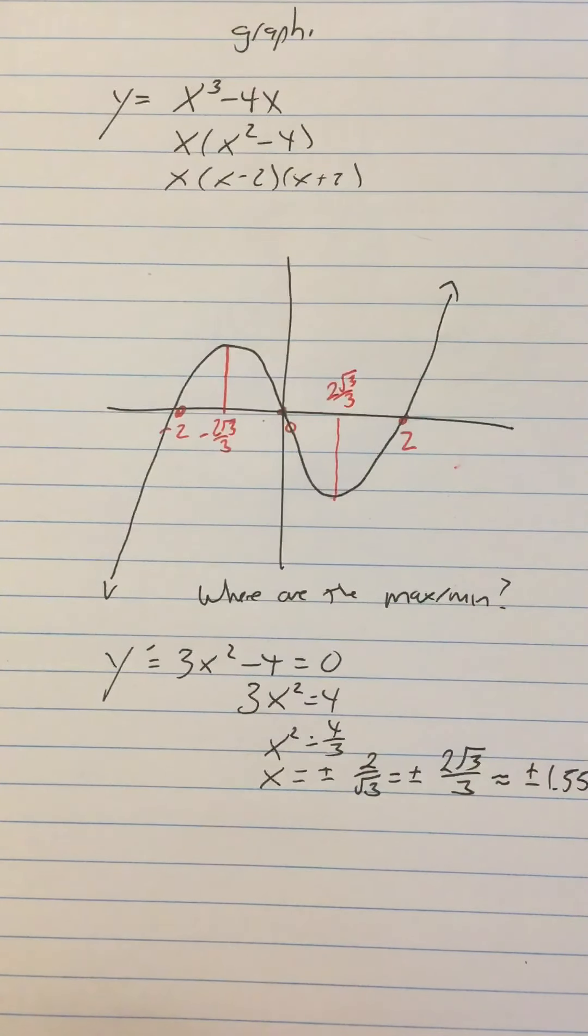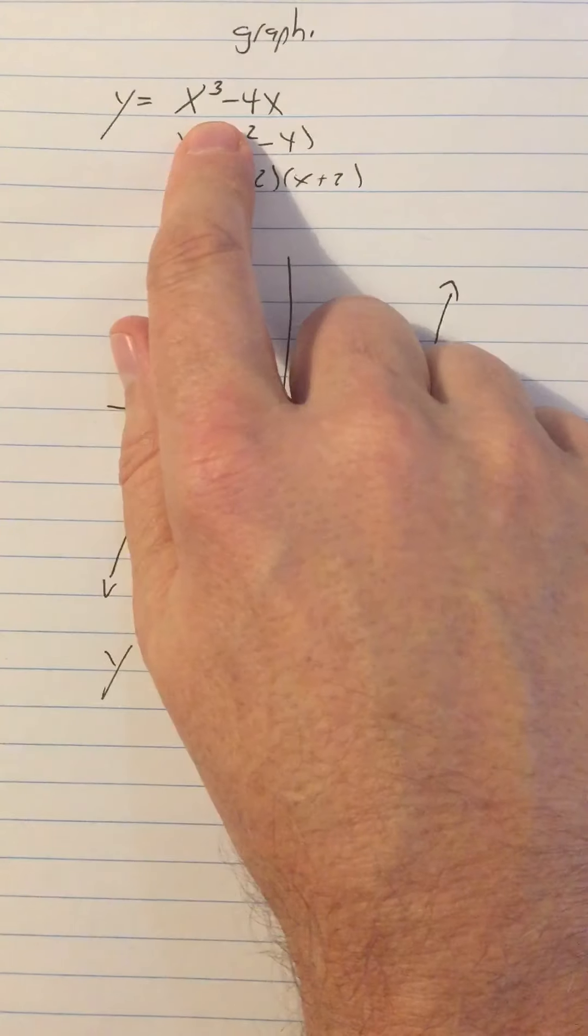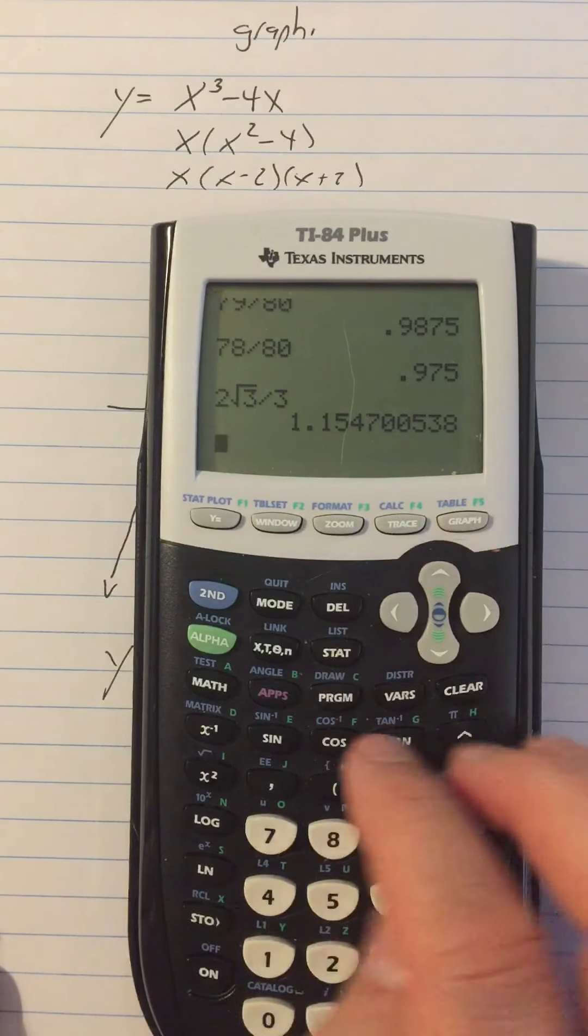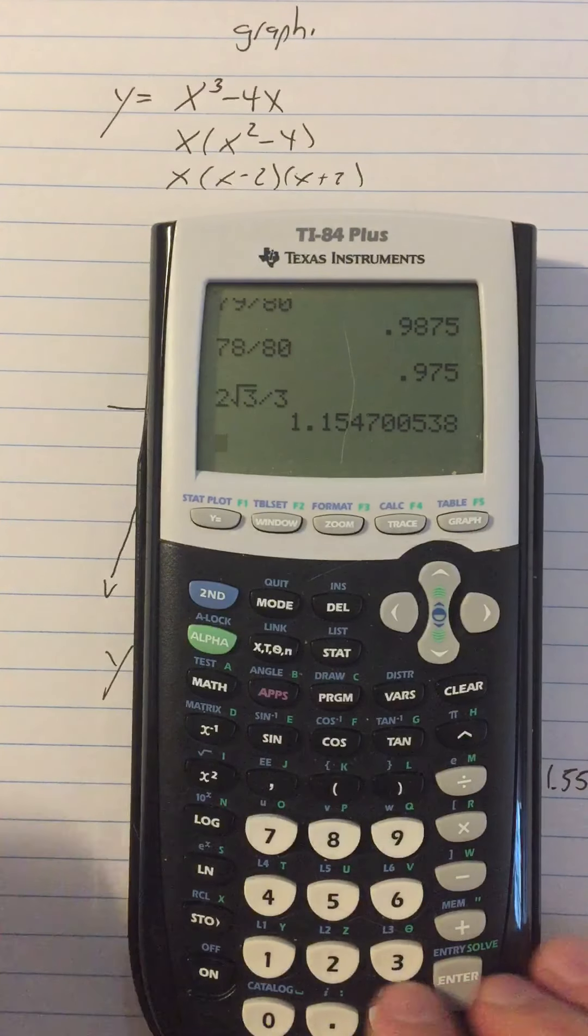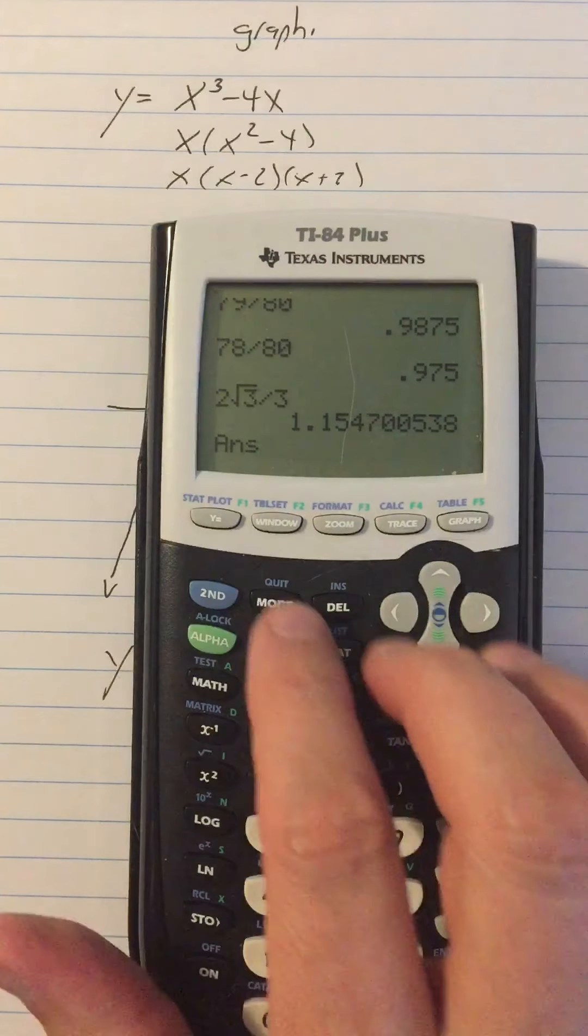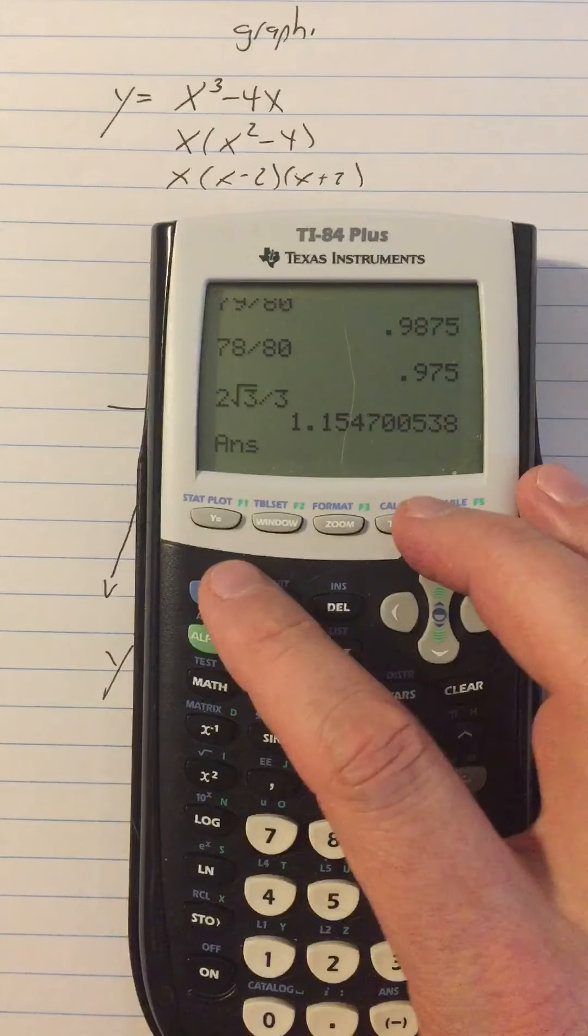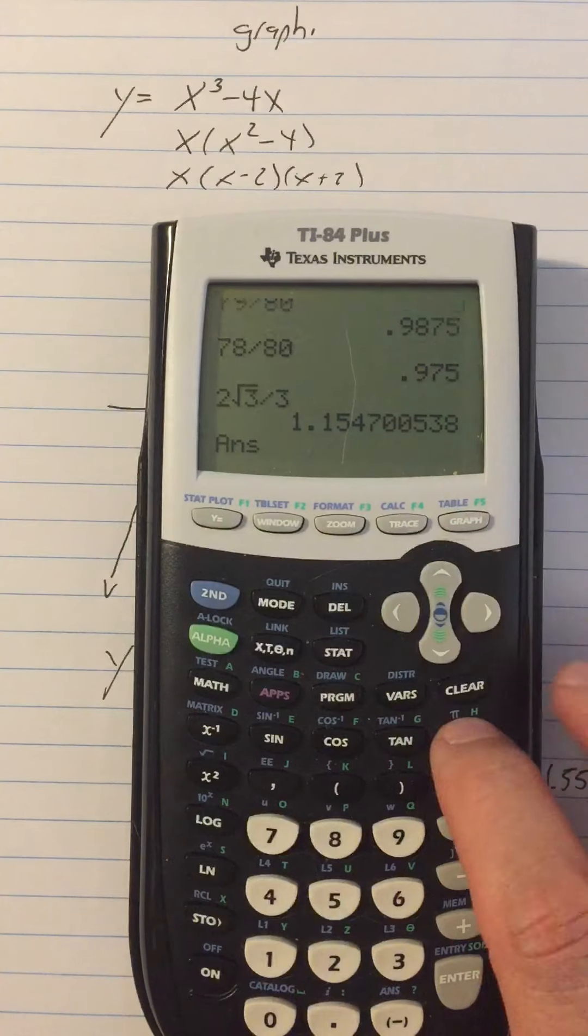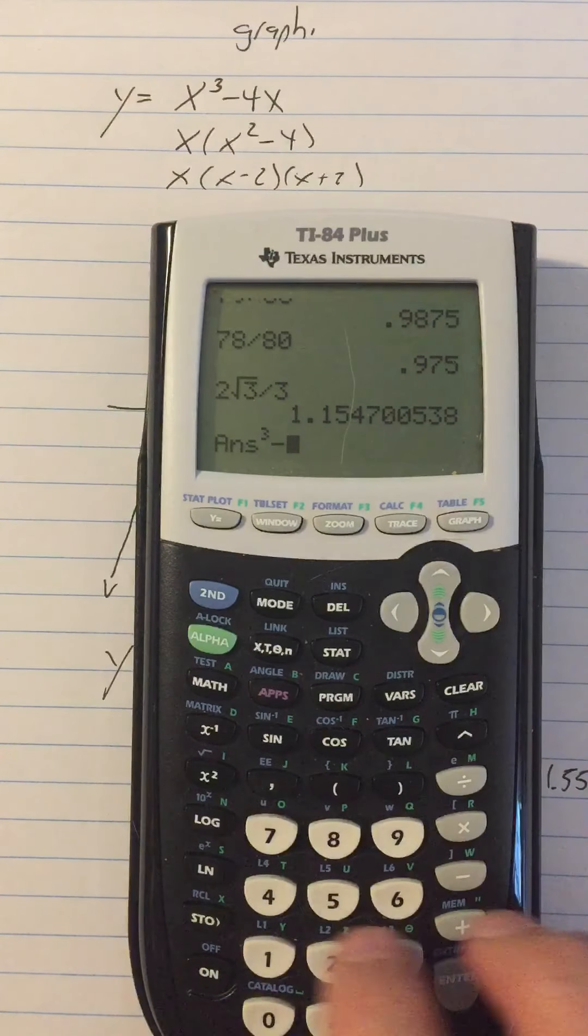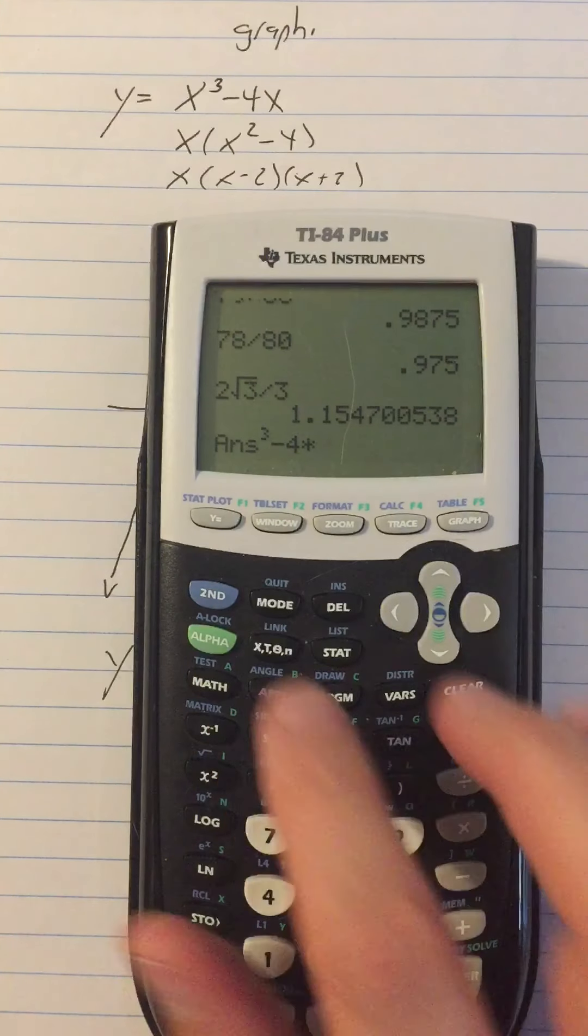And if we want to know how high that goes, of course, we just take this number and put it into x cubed minus 4x. So we could do that number. So let's go, we can go like shift answer cubed, so to the third power.